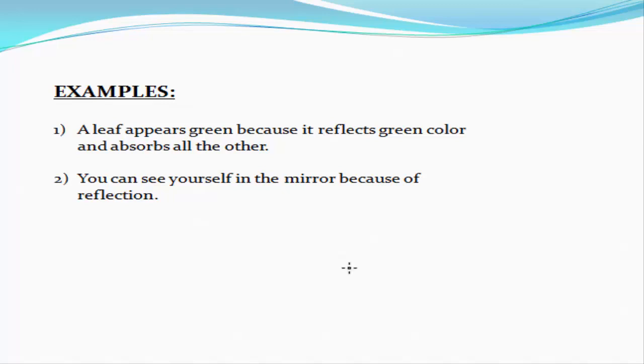We see objects because of light and we see them in a particular color because of the reflected ray. The second example is you can see yourself in the mirror because of reflection.